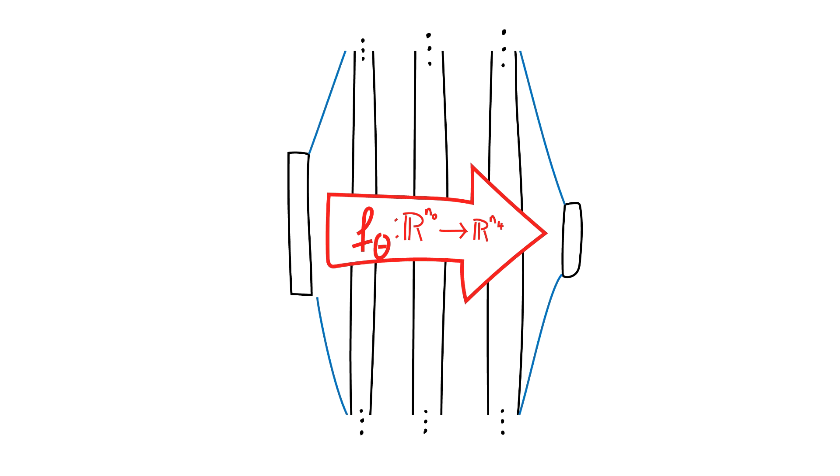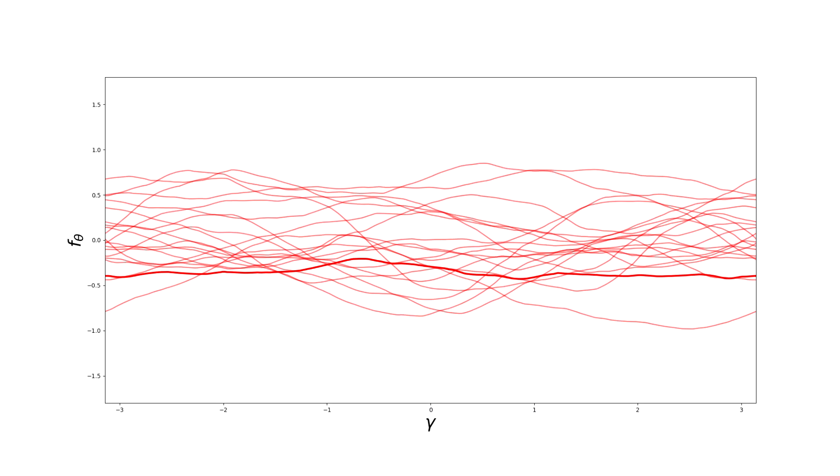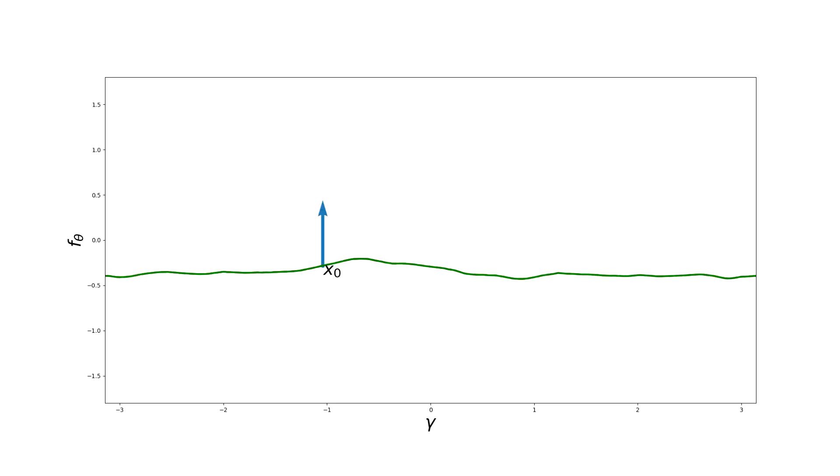In this limit, we already know that the network function has a Gaussian distribution at initialization. Here I have plotted 20 random initializations of the network function on the unit circle.